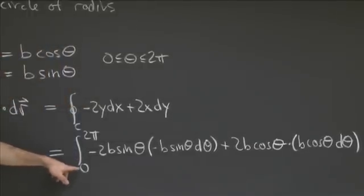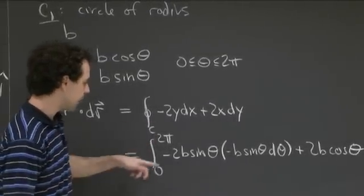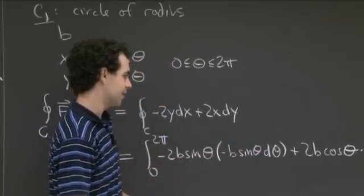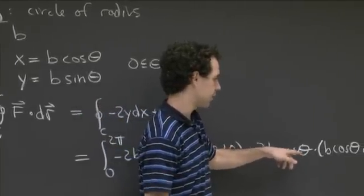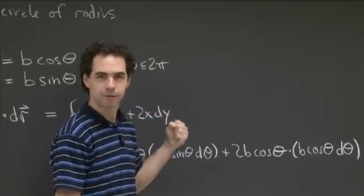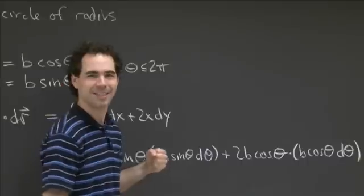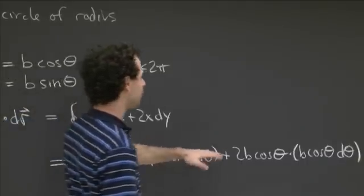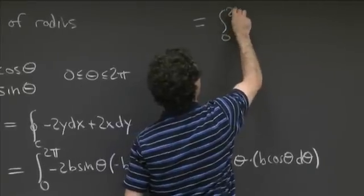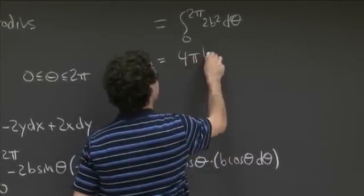So the line integral over c1 of F dot dr equals the integral from 0 to 2π of 2b² sin²θ dθ plus 2b² cos²θ dθ. Factoring out 2b², we're left with the integral of sin²θ plus cos²θ dθ, which equals 1. So this becomes the integral from 0 to 2π of 2b² dθ, which equals 4πb².